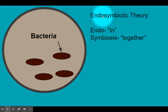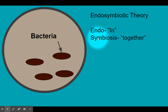Endo means in. If you think about something that's inside something — like an endoderm is the inner layer of the skin — that means inside. Symbiosis means together. Think about what a symbiotic relationship is: they live together. And think about what a symphony orchestra is — it's all the instruments of different types playing together.